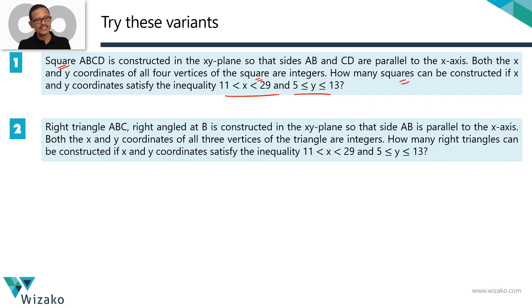Second one, right triangle ABC, right angled at B is constructed such that side AB is parallel to the x-axis. So BC is obviously going to be parallel to y-axis. The x and y values have left it intact. The question is, how many such right triangles can be formed? So one is square, second is right triangle. Post your answers to the comment section. Best wishes for your GMAT preparation.